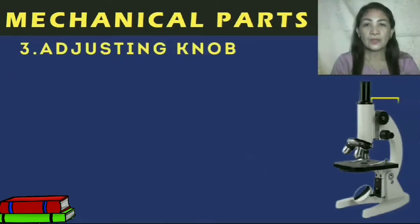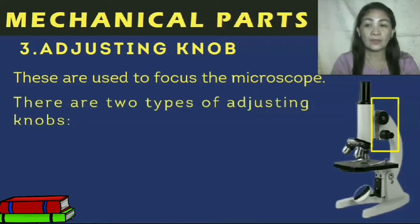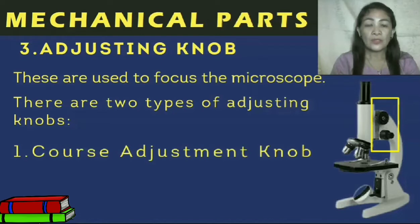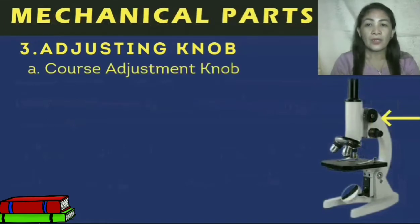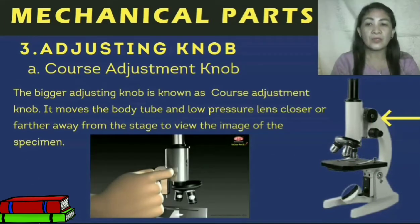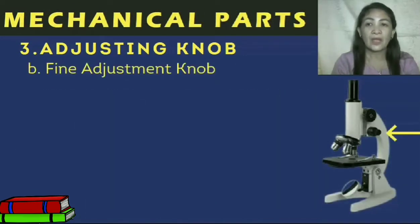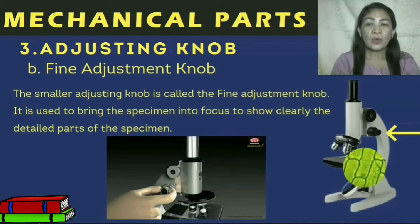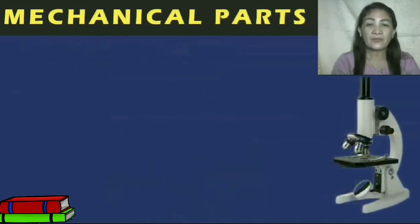Third are the adjusting knobs, used to focus the microscope. There are two types: one, coarse adjustment knob; two, fine adjustment knob. The coarse adjustment knob is the bigger knob — it moves the body tube and low power lens closer or farther away from the stage to view the image of the specimen. The fine adjustment knob is the smaller knob — it is used to bring the specimen into focus to show clearly the detailed parts of the specimen.